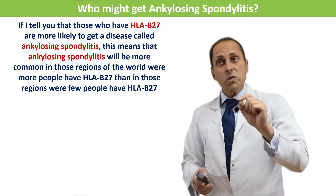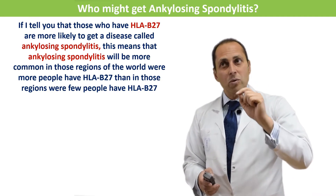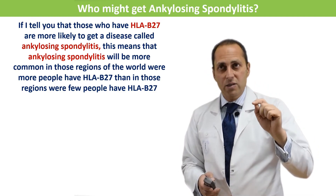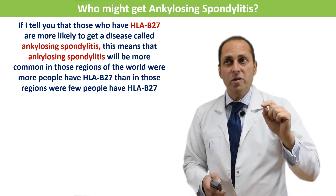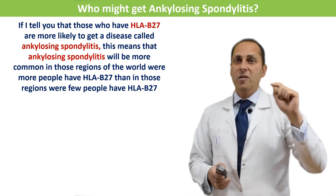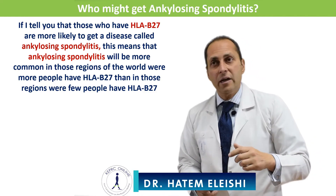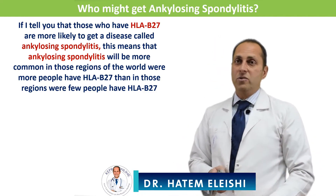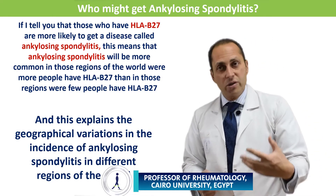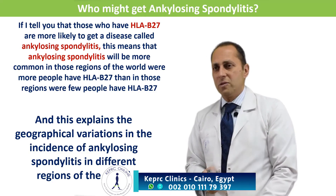Likewise, if I tell you that those who have HLA-B27 are more likely to get ankylosing spondylitis, this means ankylosing spondylitis will be more common in those regions of the world where more people have HLA-B27 than in those regions where few people have HLA-B27. And this explains the notable geographical variations in the incidence of ankylosing spondylitis in different regions of the world.